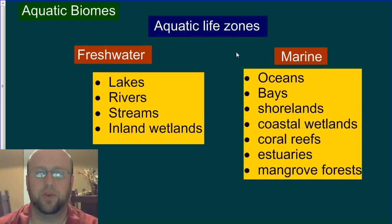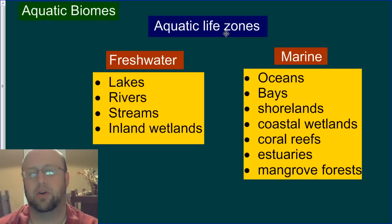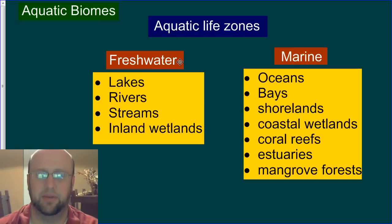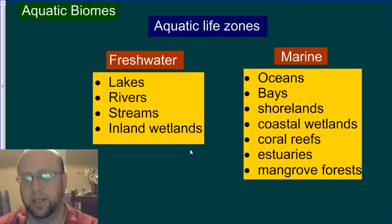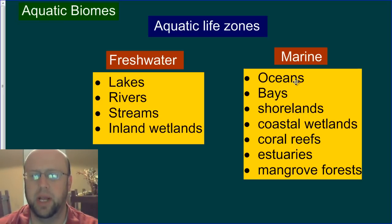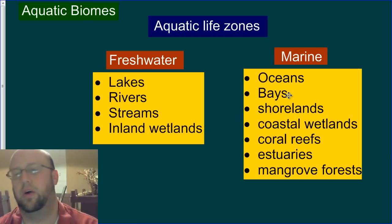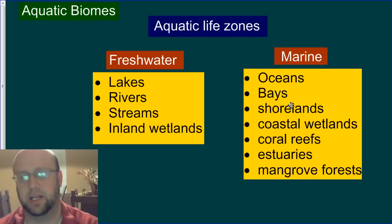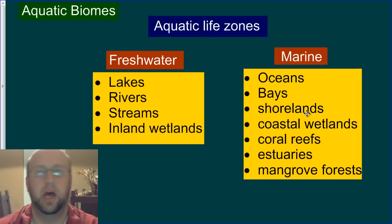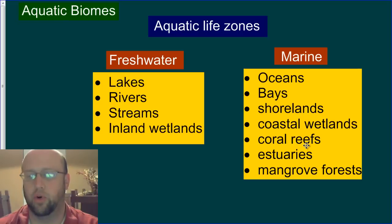We're going to split these up into freshwater and marine biomes, sometimes called aquatic life zones. Aquatic-type ecosystems aren't always referred to as biomes, but either way is fine. Freshwater ones include lakes and rivers, streams, ponds, and inland or freshwater wetlands. Marine organisms live in oceans and bays — bays are essentially oceans in a smaller, more confined area, still essentially part of the ocean, much like the Gulf of Mexico. Then there are the coastal areas: coastal wetlands, coral reefs, estuaries, and mangrove forests.